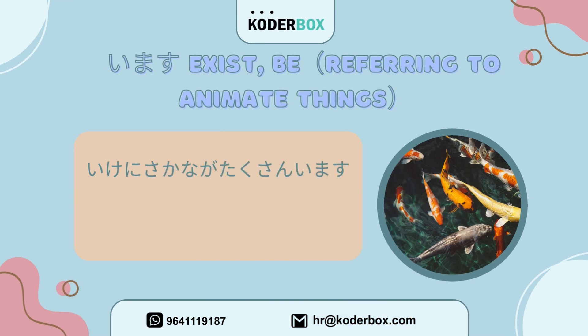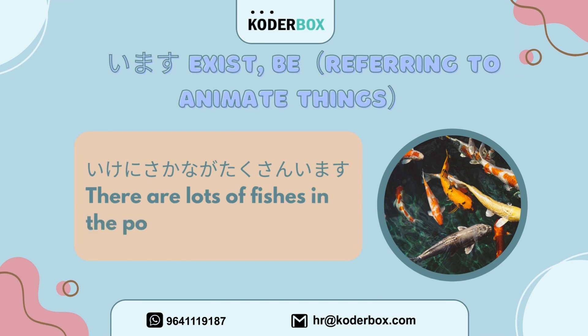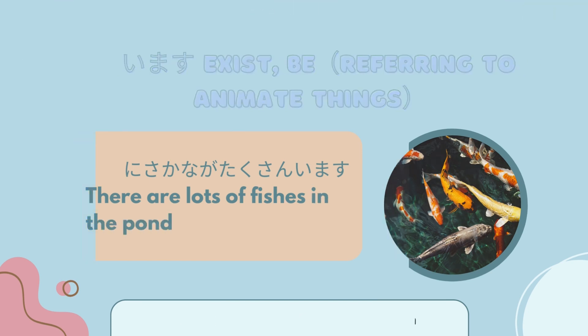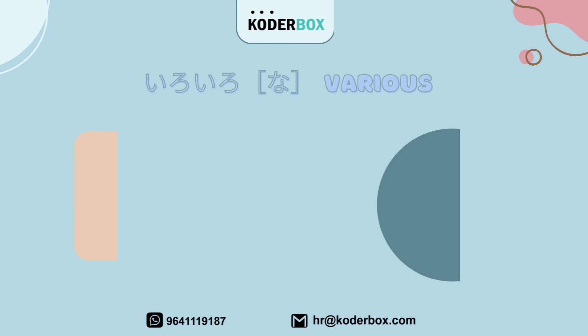Second, imasu — Exist, be — referring to animate things. Ike ni sakana ga takusan imasu. There are lots of fish in the pond.